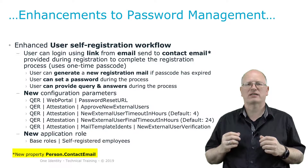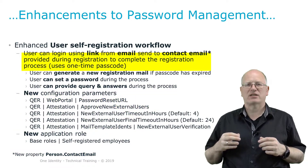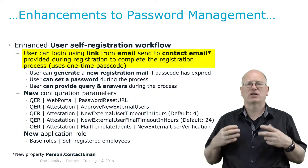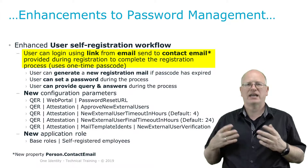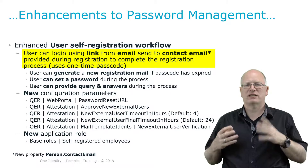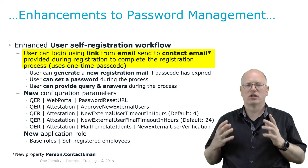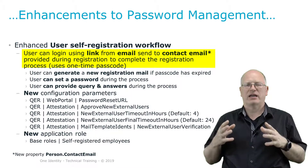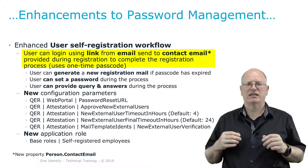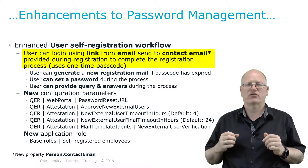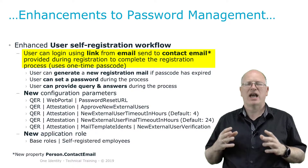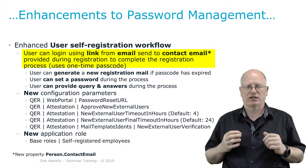This contact email address could be some email address which is not the standard email address of a user. That means I can open the registration form, enter my details, and also enter a contact email address — maybe from Google or similar — and then send the complete request to the identity manager. Same process as before: a person record gets created, it is deactivated, and an attestation process gets started.